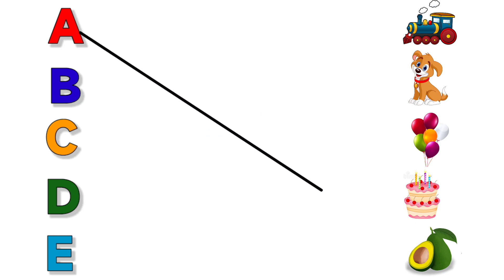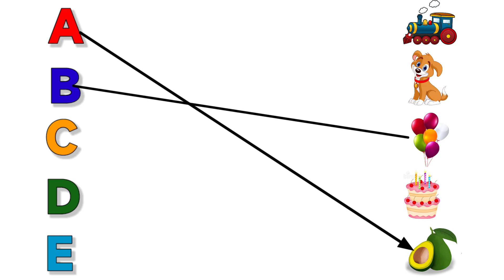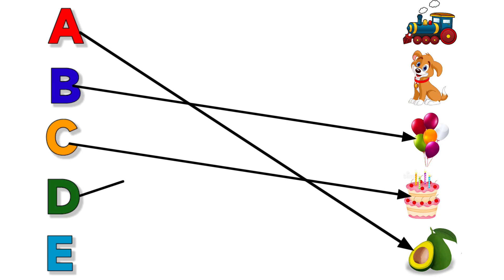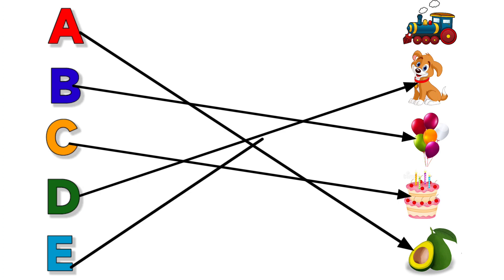A for Avocado. B for Balloon. C for Cake. D for Dog. E for Engine.